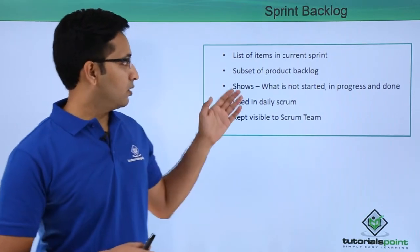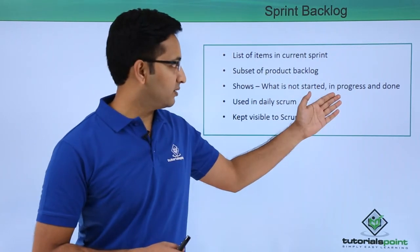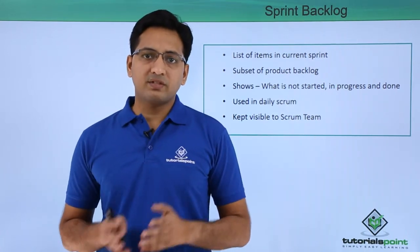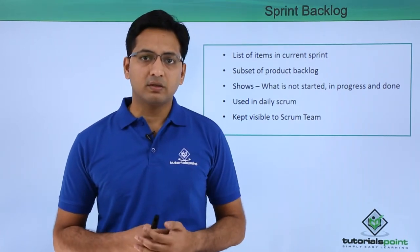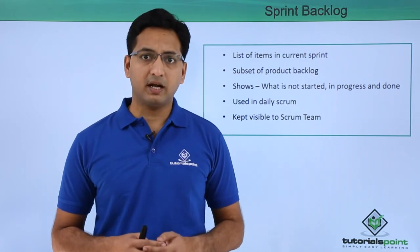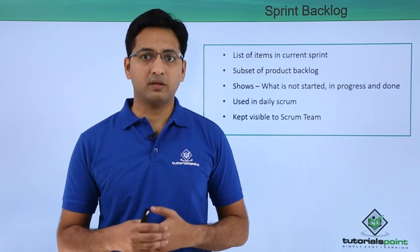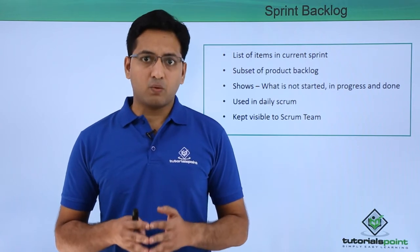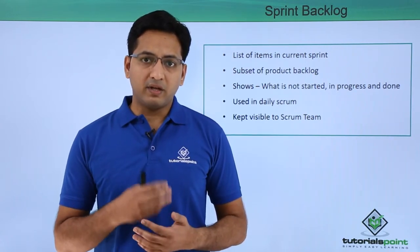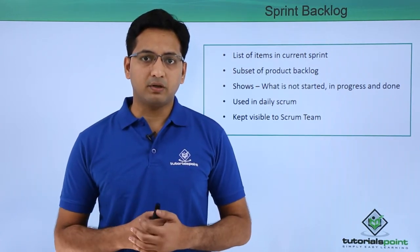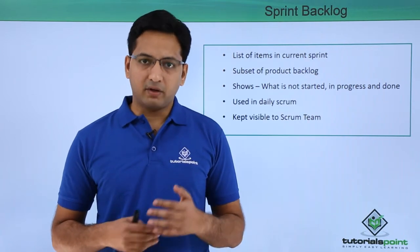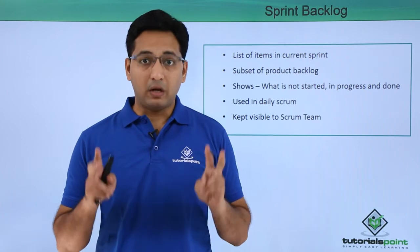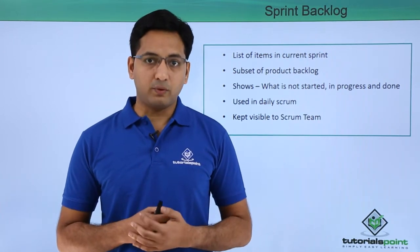The sprint backlog shows what is not started, what is in progress, and what is done. It provides visibility to all the scrum team members regarding what is currently in progress, what is not started, or what is done. This eventually helps the scrum team members to understand if there are any issues or what is the current velocity of the team in doing the work.